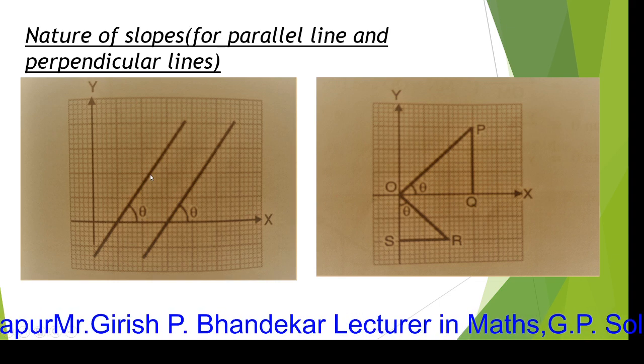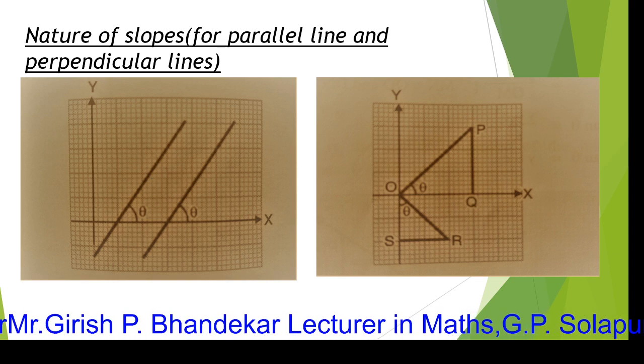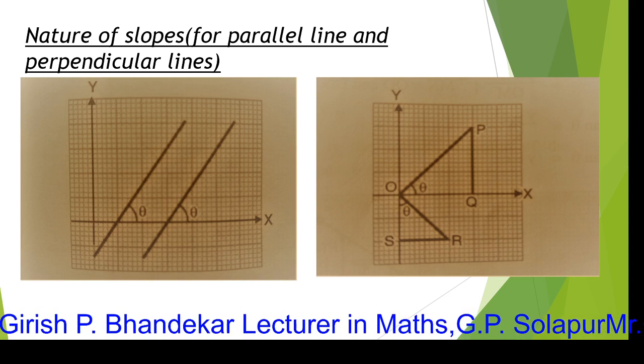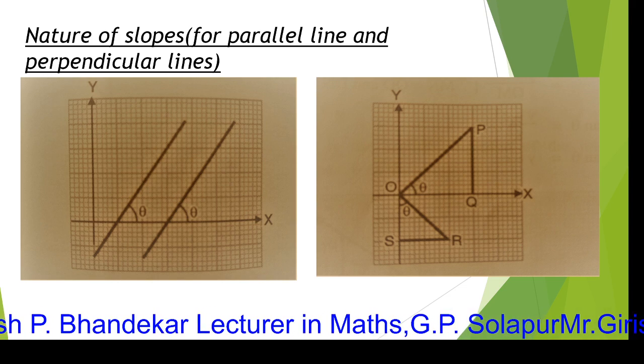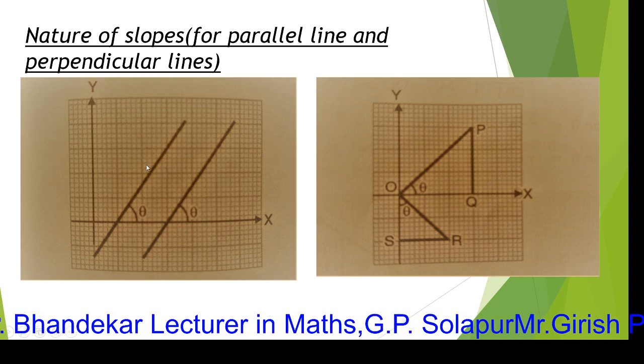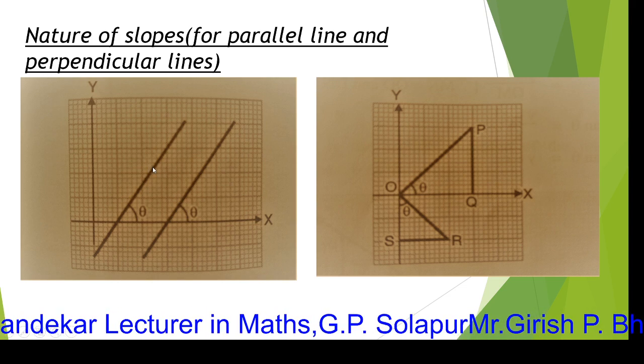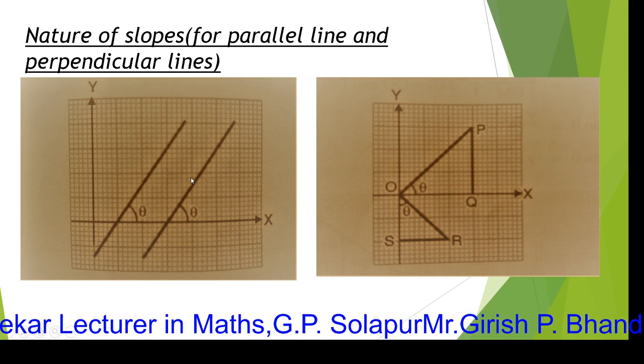The condition for two lines to be parallel to each other is: the slope of the first line M1 is equal to the slope of the second line M2. That is, M1 is equal to M2.